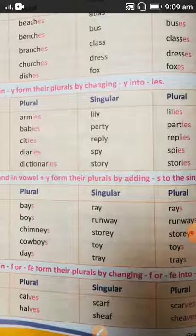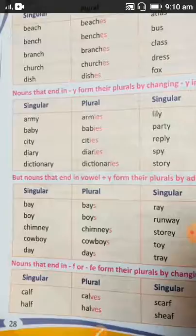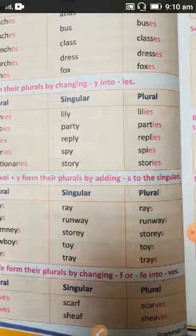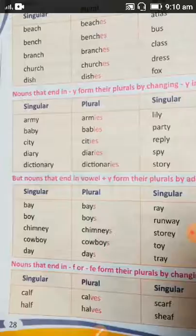But nouns that end in vowel plus -y — if before the -y there is a vowel, then we add only -s, not -ies. For example, ray and boy — because 'o' is a vowel in 'boy' before the -y, so we only add -s. I hope that is clear.